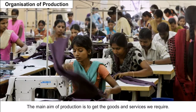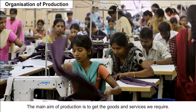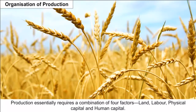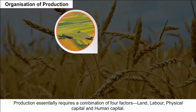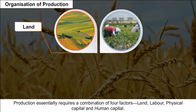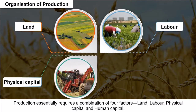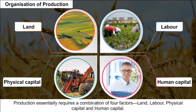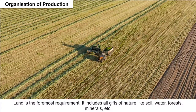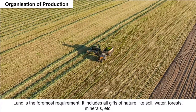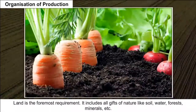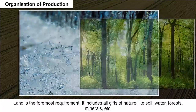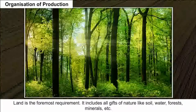Organization of Production: The main aim of production is to get the goods and services we require. Production essentially requires a combination of four factors: land, labor, physical capital, and human capital. Land is the foremost requirement and includes all gifts of nature like soil, water, forests, minerals, etc.